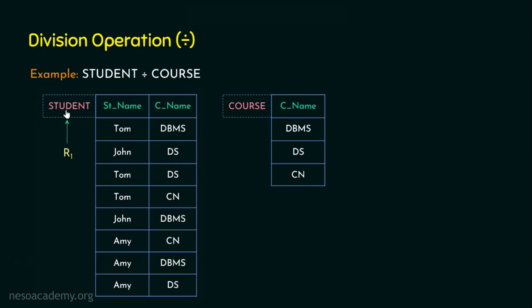Now let's apply the rule. Is student not equal to course? Definitely — there are two attributes in the student relation and only one in the course relation, so student is not equal to course. The first condition is satisfied. For the second condition, student divided by course is possible only if course is a proper subset of student, meaning every attribute of course — DBMS, DS, CN — should appear in the student relation. Yes, all three are there, so both conditions are satisfied and we can perform student divided by course.